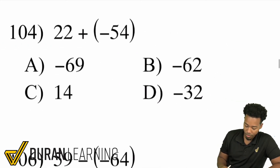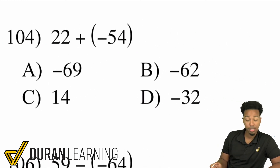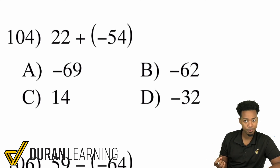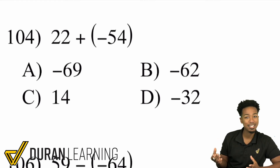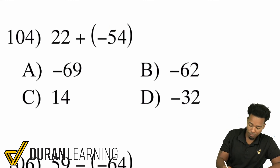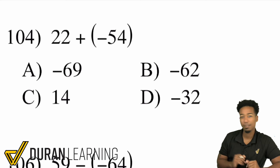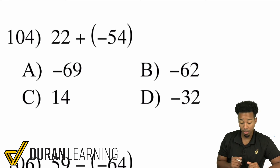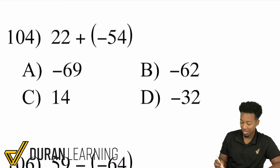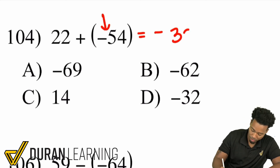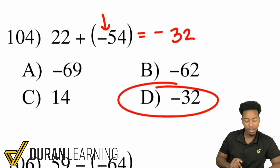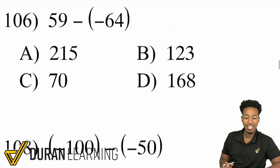Problem 104: 22 plus negative 54. Notice we have a positive and a negative being added — that is the same thing as subtraction. Keep the sign of the bigger number. 54 minus 22, what's the difference? That's 32. We keep the sign of the bigger number, which is negative 54, so the answer is negative 32.